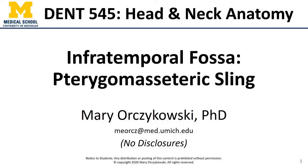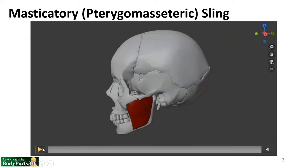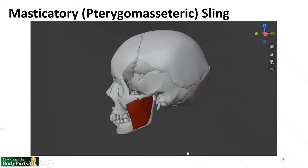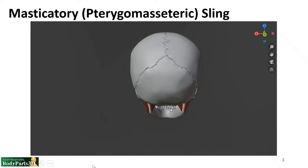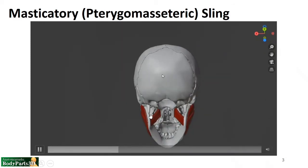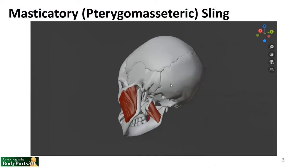Welcome back everyone, this is Dr. O and we're going to talk through the pterygomasseter sling, also known as the masticatory sling. We'll talk about which muscles of mastication make up this sling. Starting with our visual, the first muscle is the masseter, found more laterally, and the more medial muscle is the medial pterygoid muscle.